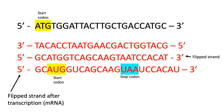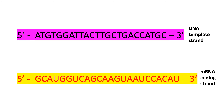Both strands have the start codon ATG, which becomes AUG after transcription. To determine the coding strand, we must find which strand has a stop codon 4 codons down from the start codon. We can see that this is the bottom strand because UAA is a stop codon 4 codons down from the AUG start codon. The top strand does not have a stop codon 4 codons down, so we know the bottom strand is the coding strand and the top strand is the template strand.